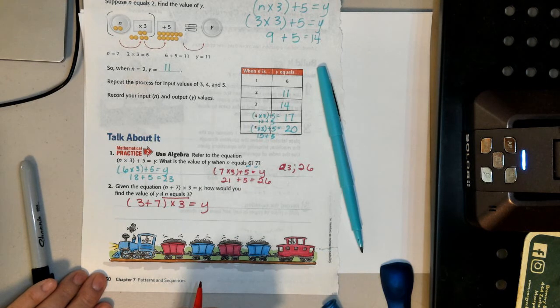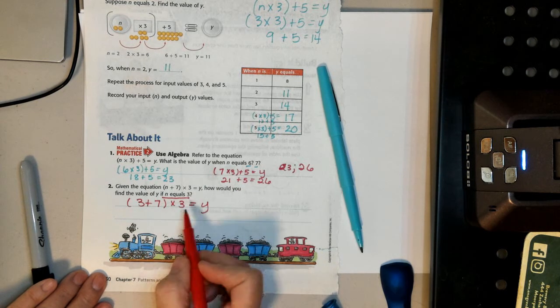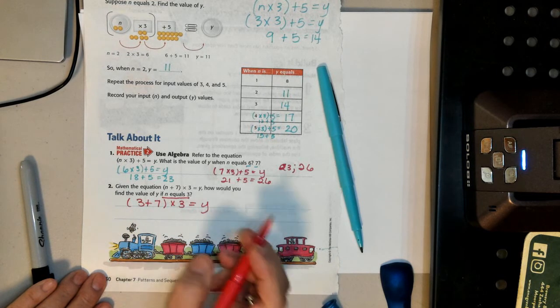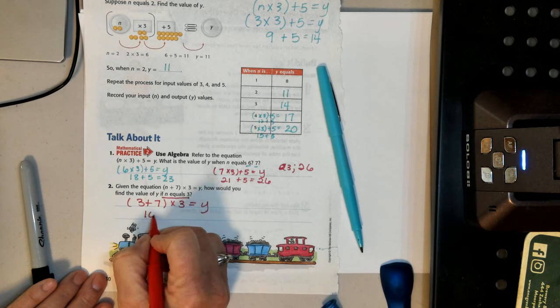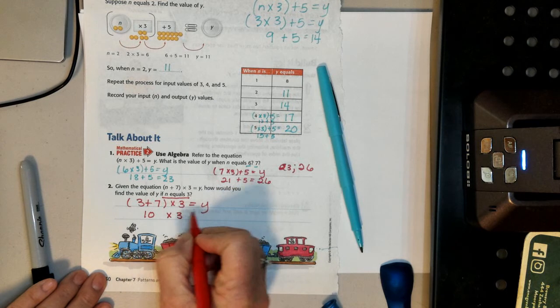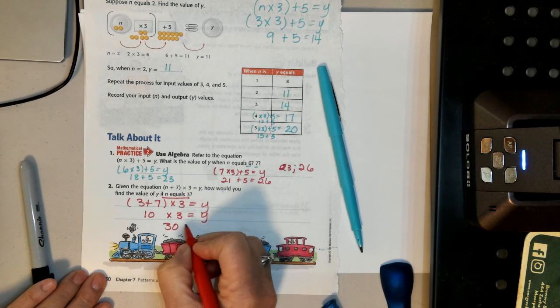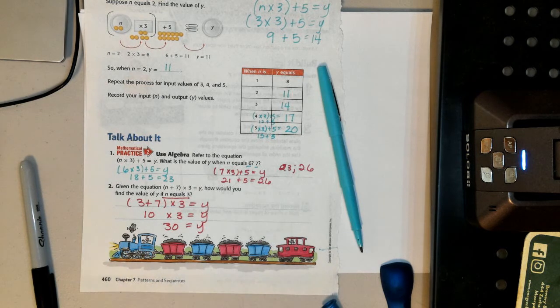Well, we do remember, even though this is multiplication, you always do what's in the parentheses first. So this is 10 times 3 equals y. And 10 times 3 is 30. So y equals 30.